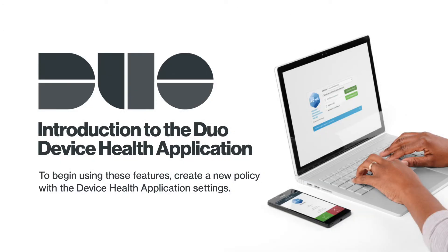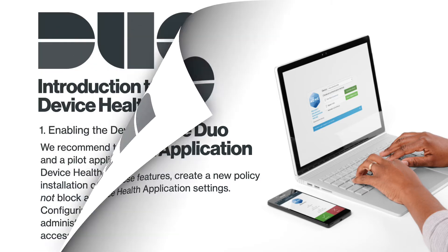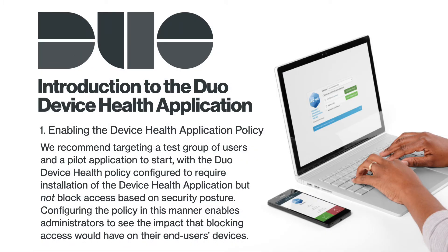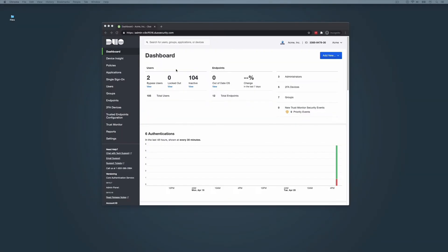To begin using these features, create a new policy with the Device Health application setting. We recommend targeting a test group of users and a pilot application to start, with the Duo Device Health policy configured to require installation of the Device Health application but not block access based on security posture. Configuring the policy in this manner enables administrators to see the impact that blocking access would have on their end-users' devices.